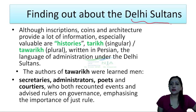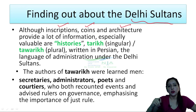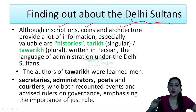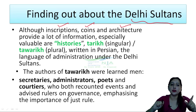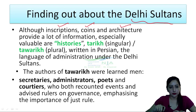Now we know about the Delhi Sultans. What sources provide information about them? As you know, there are inscriptions, coins, and architecture made by them, which provide a lot of information about the Delhi Sultans. And especially, there are some histories here called tarikh or twarikh.